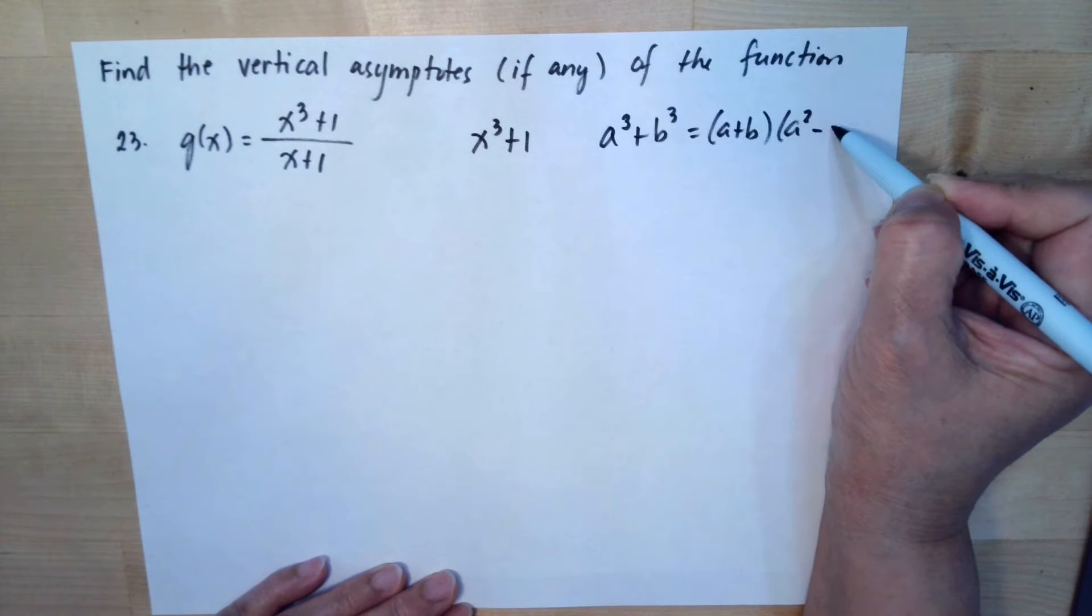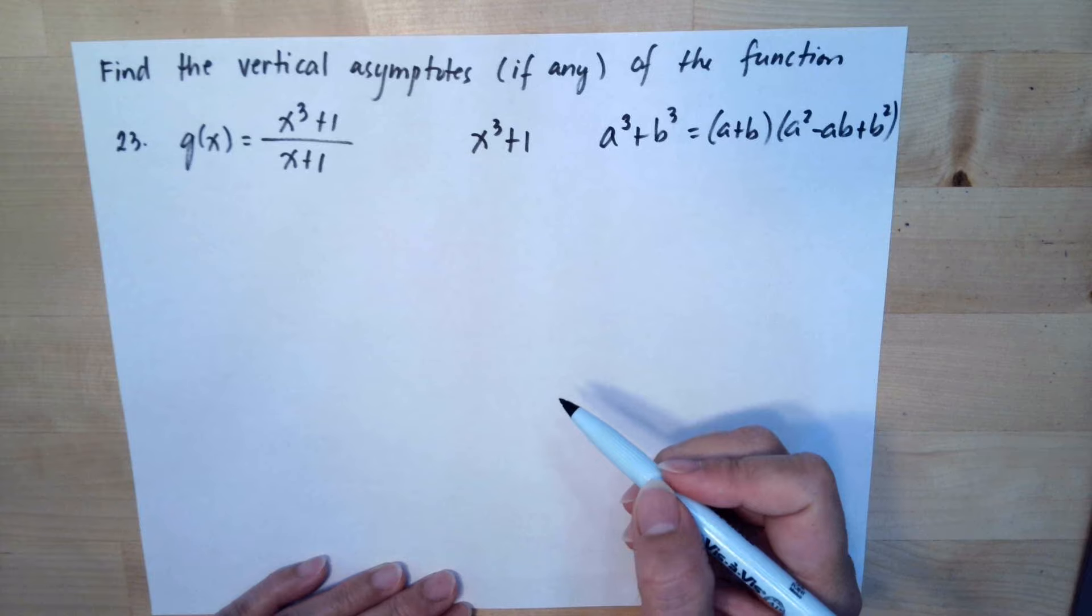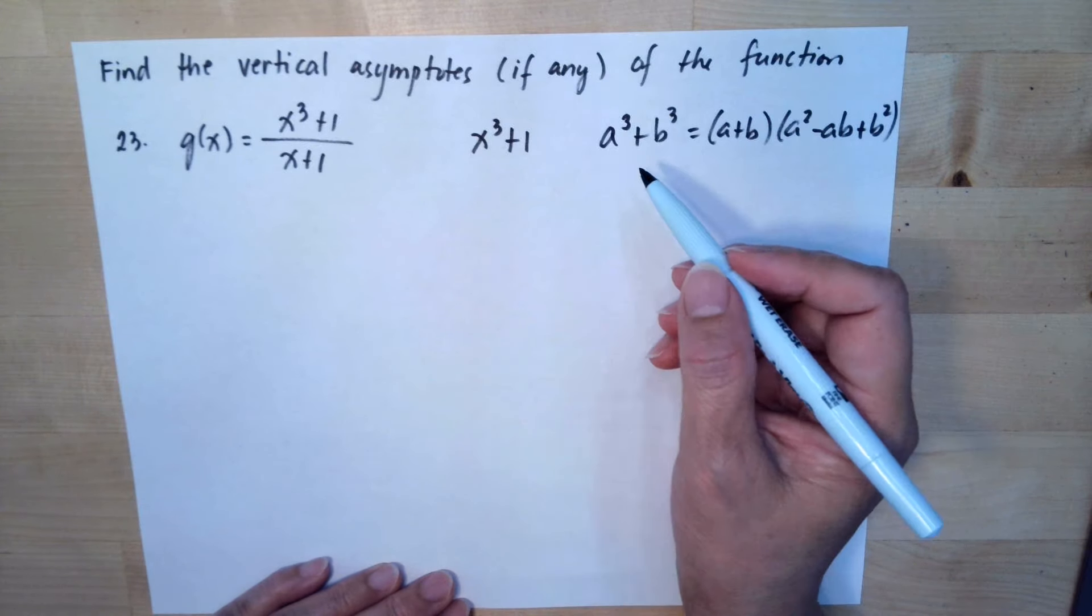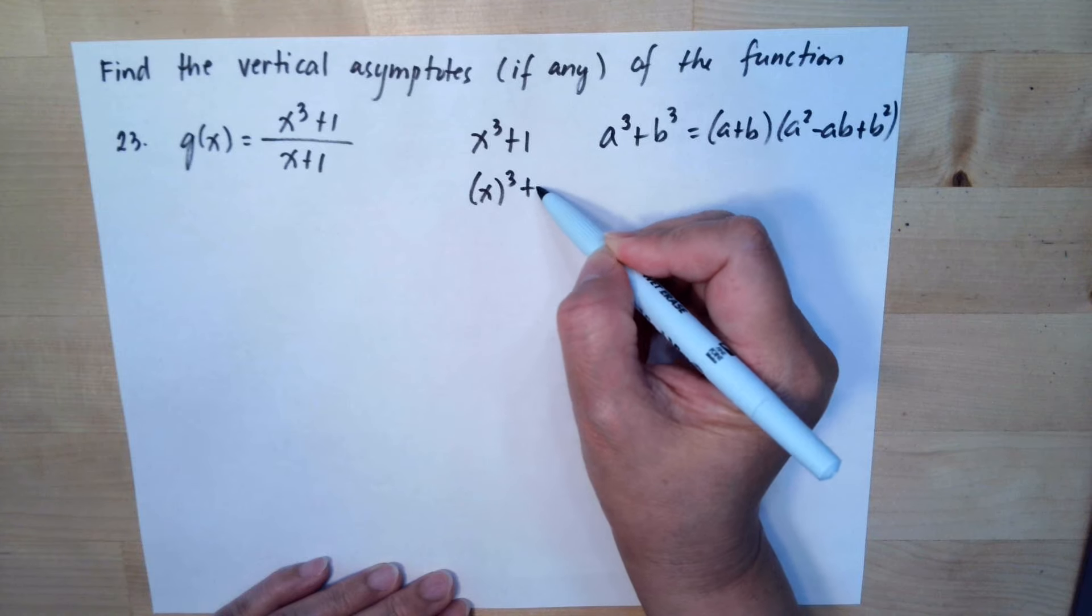a² minus ab plus b². So this is the formula of the cubic. Then we can say this can be x³ + 1³.